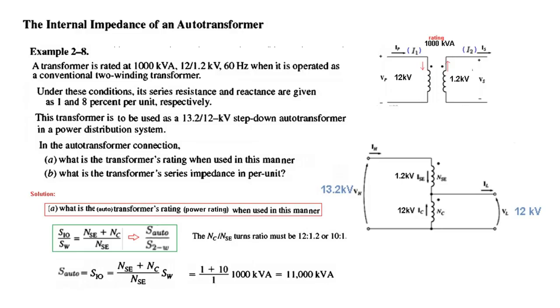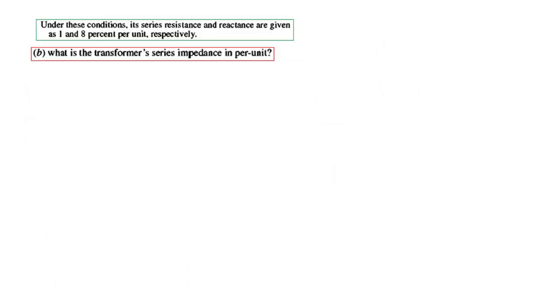S_auto is 1100 kVA. This is the first part. You can see that from 100 kVA we have gone to 1100 kVA, an 11 times advantage.